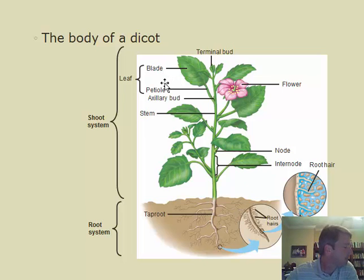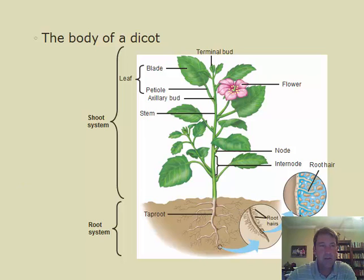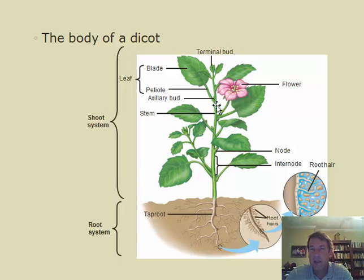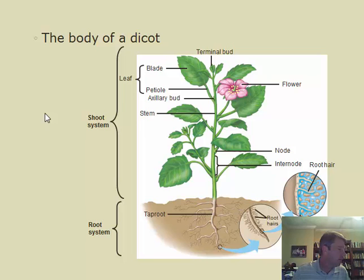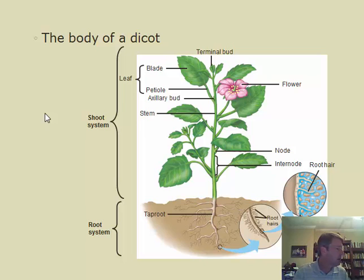The leaf is composed of two parts: the blade and the petiole. There are also different types of leaf arrangements — how leaves are arranged on the stem. Alternate arrangement means one leaf attaches at each node, alternating sides. Opposite means two leaves sit directly opposite each other on the same node. Whorled means three or more leaves are attached at the same node.